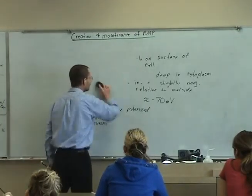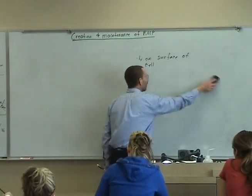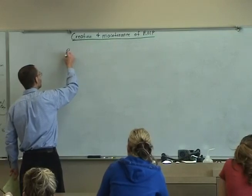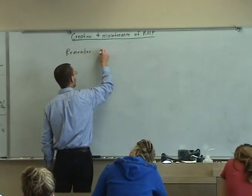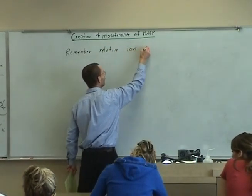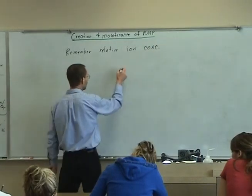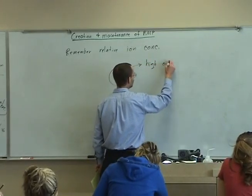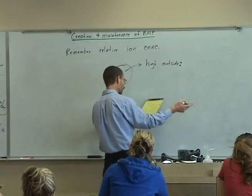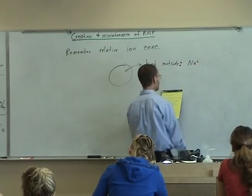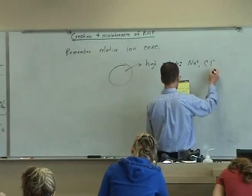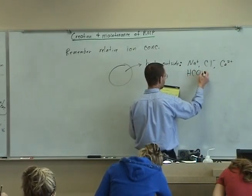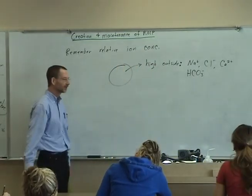The other thing to keep in mind as we go into this story is the relative concentration of ions inside the cell and outside. So remember, relative ion concentrations inside the cell and outside. So if this is our cell, high on the outside, there is relatively more sodium than inside, chloride ions, calcium, and bicarbonate. So there's relatively more of that outside the cell than inside.